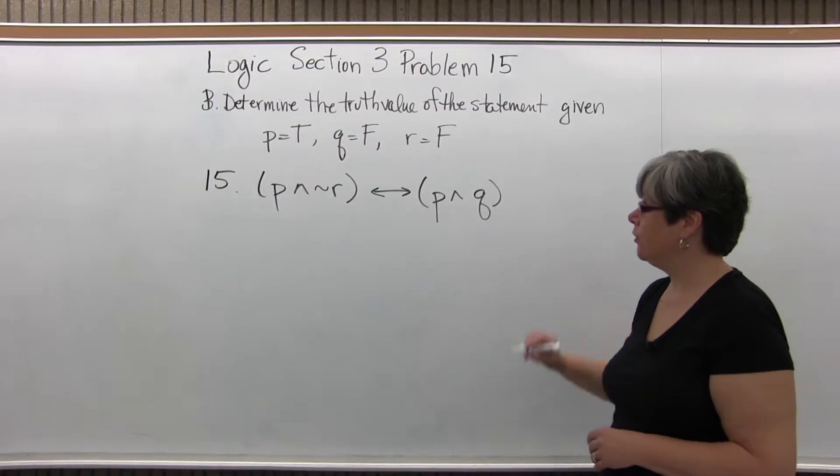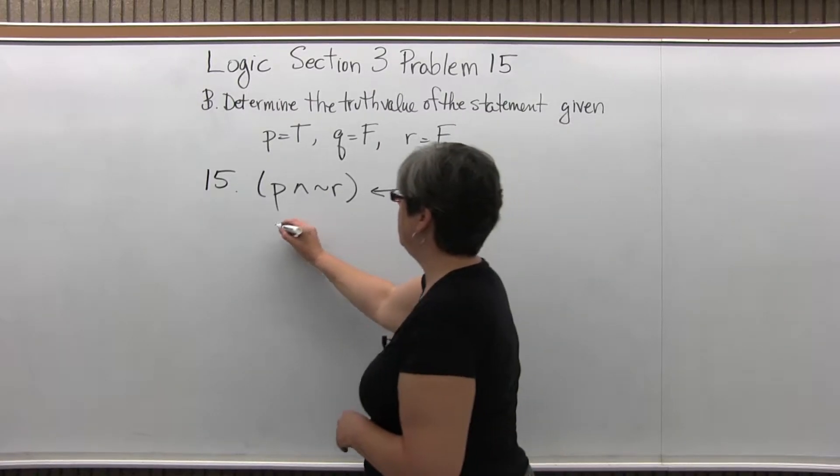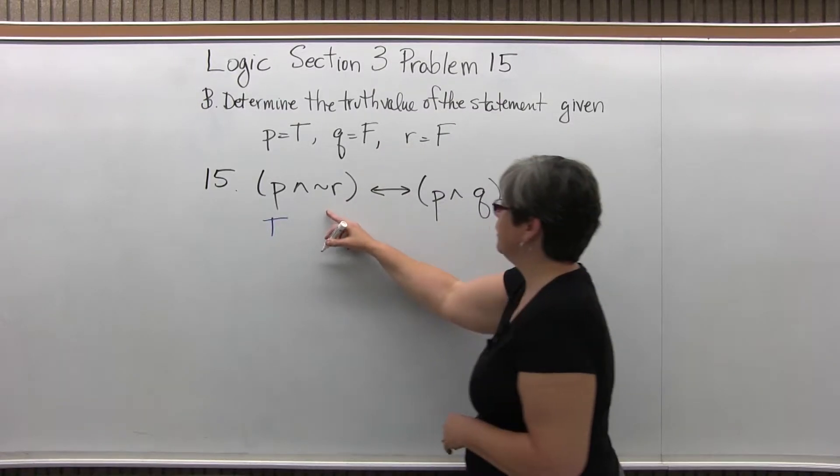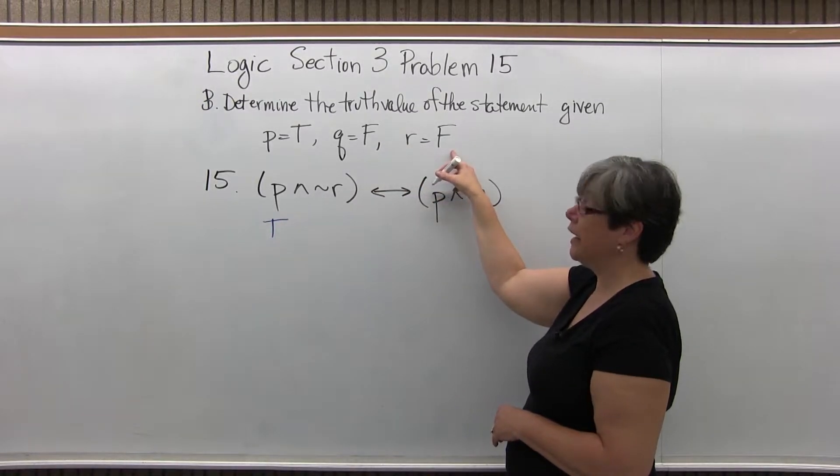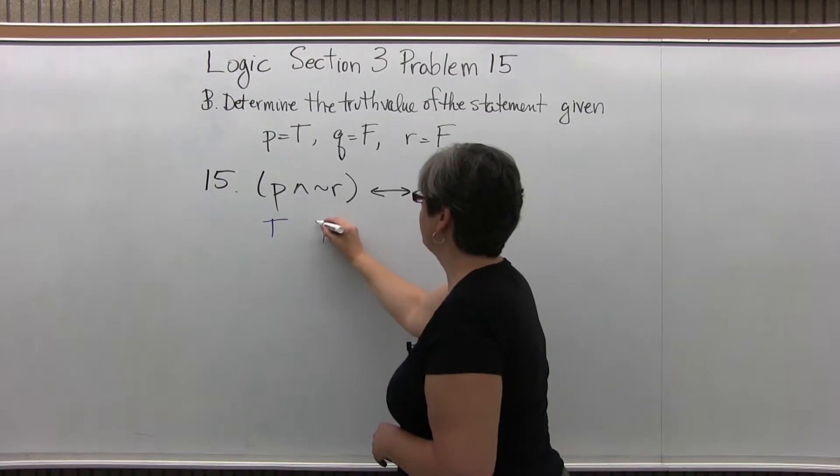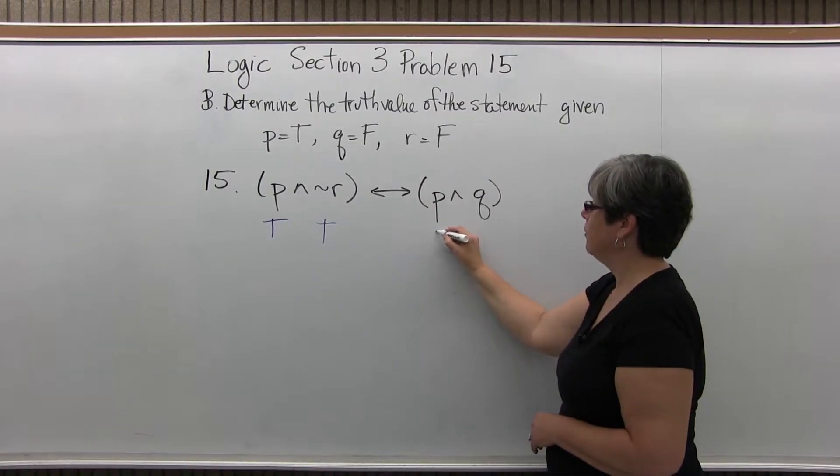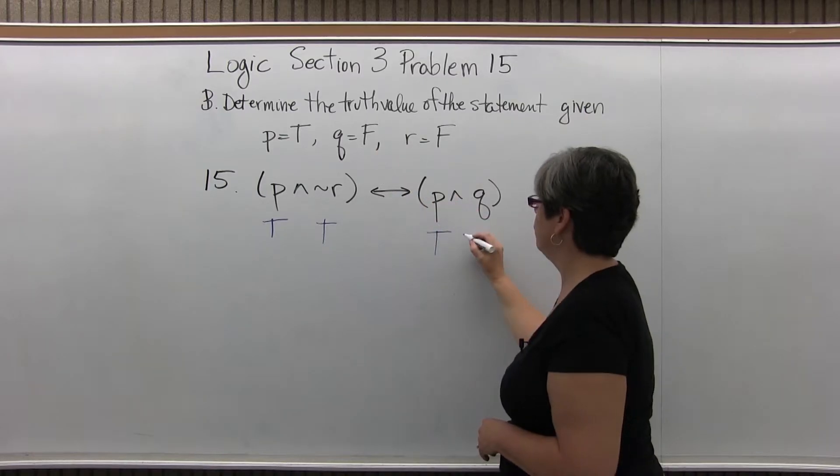We're going to begin by inserting the logical values. For P, we have true. For the negation of R, it's the negation of false, so true. For P again, we have true. And for Q, we have false.